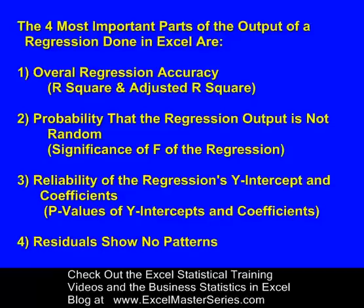The four most important parts of the output of a regression done in Excel are: number one, the overall regression accuracy, determined by R-squared and adjusted R-squared; number two, the probability that the regression output is not random, shown by the Significance of F; number three, the reliability of the regression's y-intercept and coefficients, shown by the p-values of each; and number four, the residuals showing no patterns.